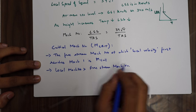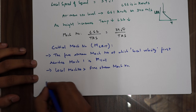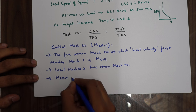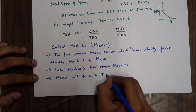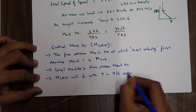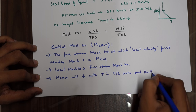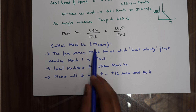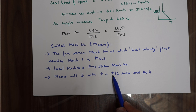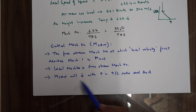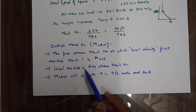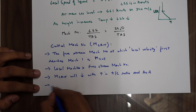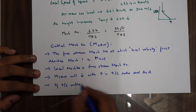As a property, Mcrit will decrease with an increase in the t/c ratio (thickness-to-chord ratio) and with an increase in angle of attack. So if you increase the t/c ratio, your Mcrit value will decrease, and if you increase your angle of attack, Mcrit will also decrease.